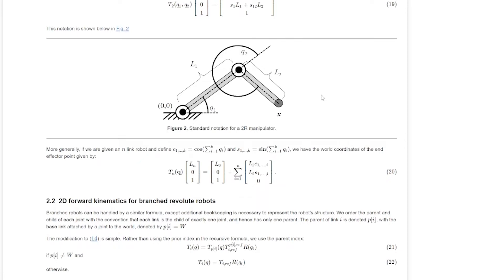Here we have two links, two joints, and at the end the end effector — a generic term for a robot hand. We could put a literal hand here, a robot gripper, a screwdriver, whatever tool we want. The whole point of robotics, and specifically motion planning, is that we want this end effector to go to a certain goal — a specified position and a specified orientation.